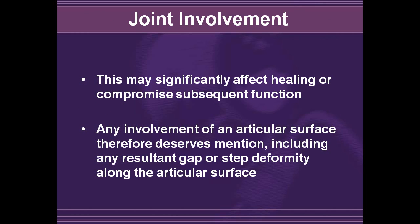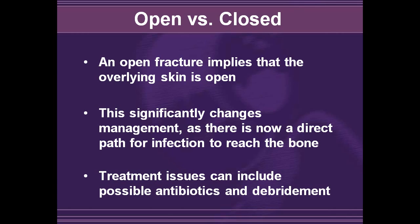Joint involvement is important to identify and describe because it may significantly affect healing and may lead to compromise of function if not well aligned. Any involvement of an articular surface deserves mention, including gap or step deformity along the articular surface. An open fracture implies there is an overlying skin wound, which changes management significantly because there is a direct path for infection from the outside environment to reach the bone, potentially leading to osteomyelitis and long-term complications. Treatment often involves antibiotics and debridement at the outset.